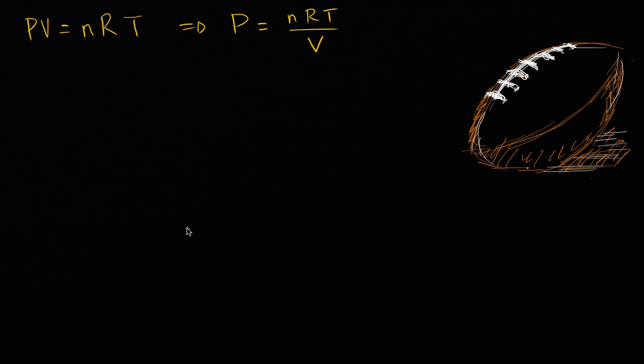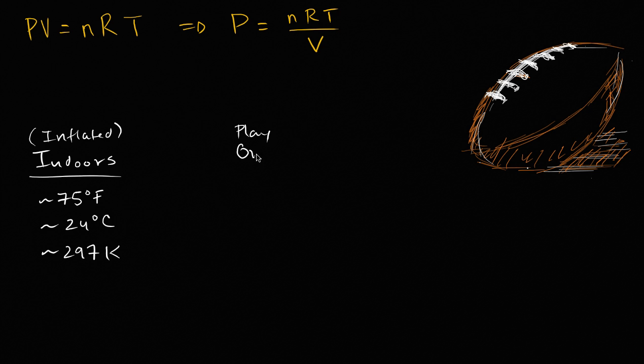Now let's think about the exact case of what happened with the New England footballs, or what the argument is for why they might have deflated naturally. The argument is, well, maybe they were inflated indoors where the temperature, this is just room temperature, roughly 75 degrees Fahrenheit, which is roughly 24 degrees Celsius, and in order to apply the ideal gas law, we'd want to convert it to Kelvin, so this is approximately 297 Kelvin. So if we're inflated indoors and then we play outdoors.